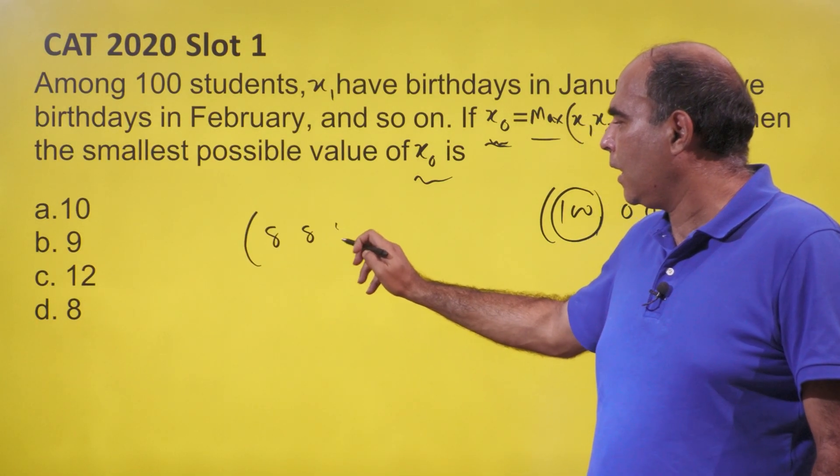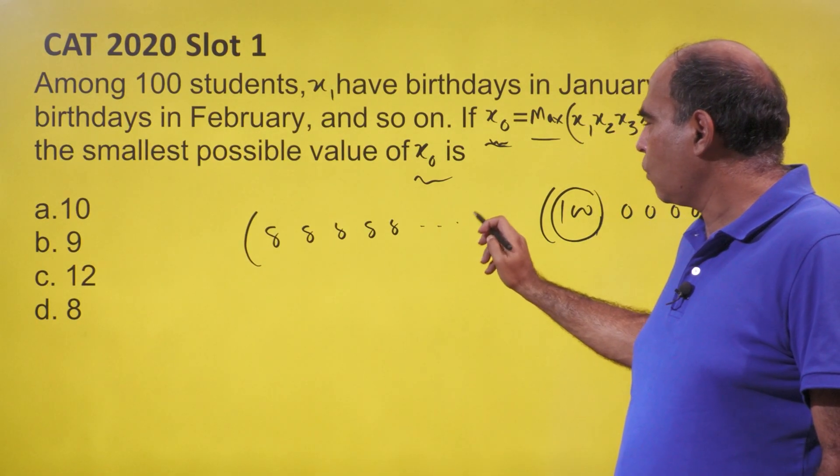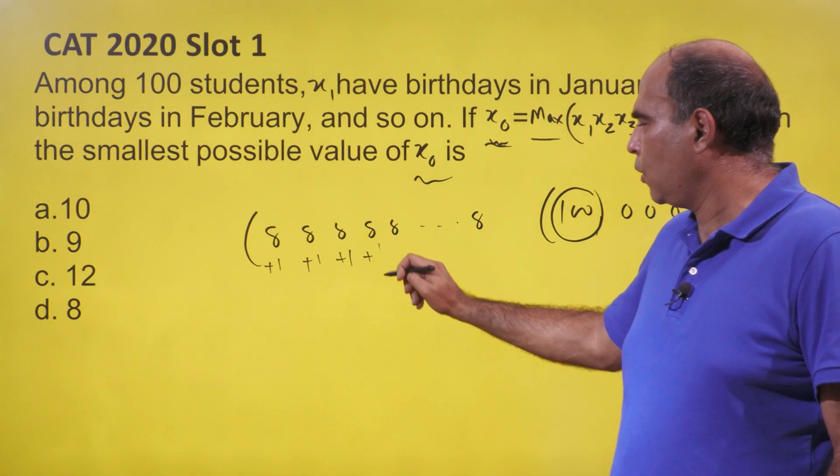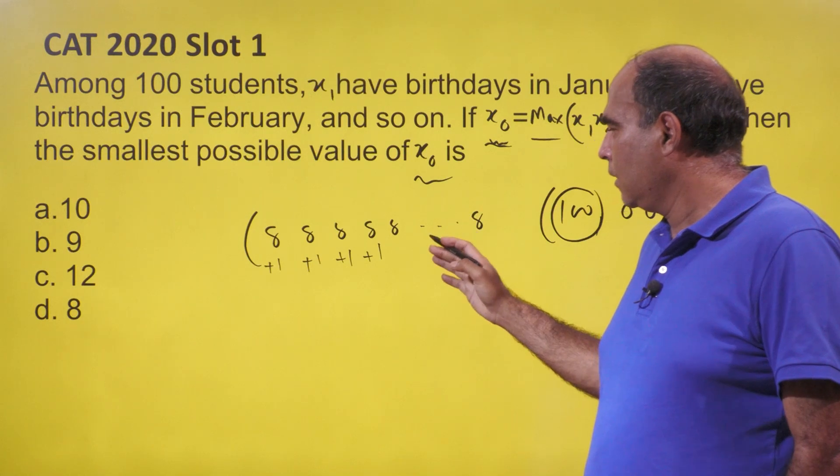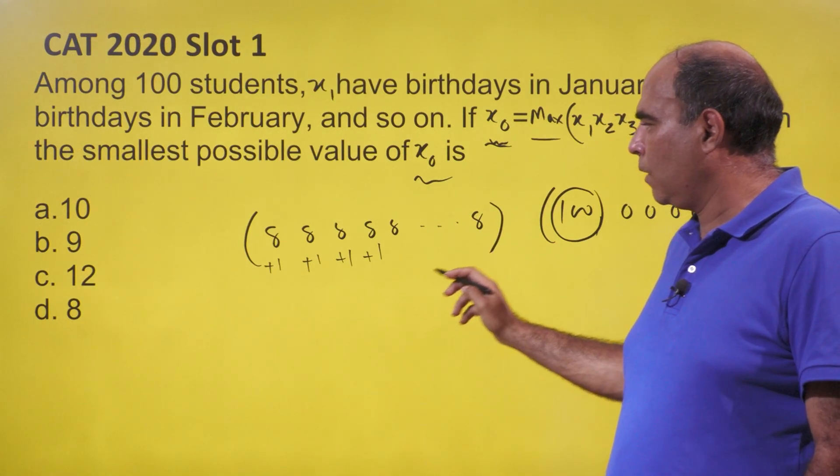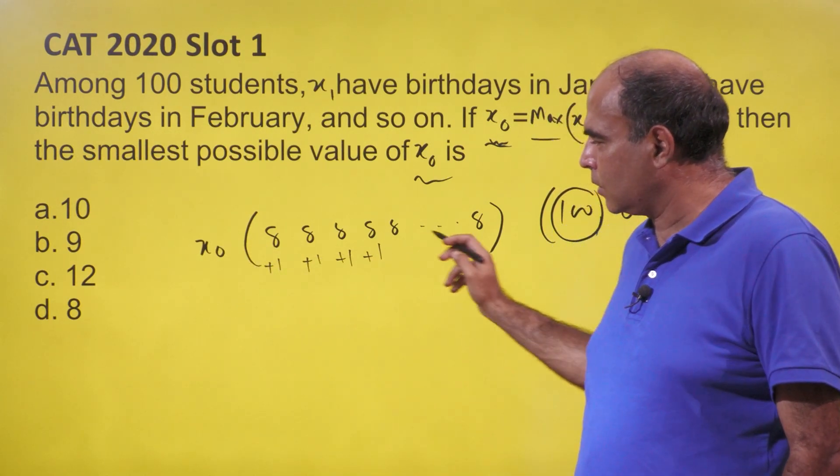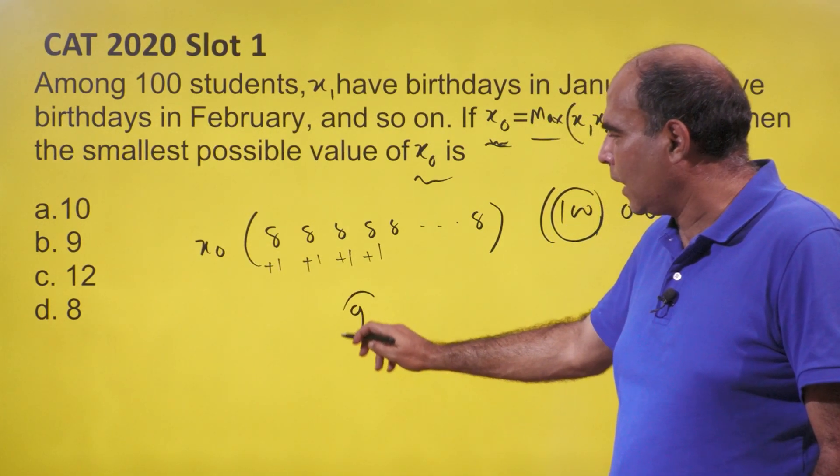The distribution should be 8 on all 12 months, then add one to the first four (or any four), and you've got 9, 9, 9, 9 and eight 8s. This gives you the structure where x₀ will select the largest amongst these, and hence x₀ will be 9.